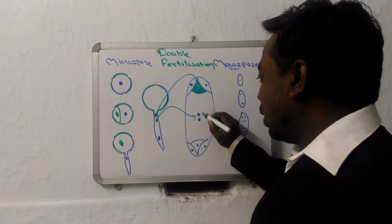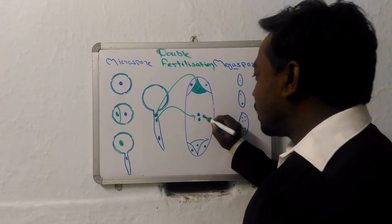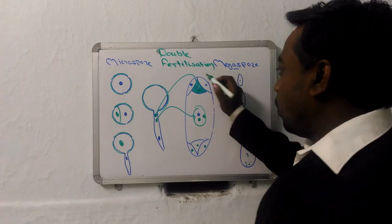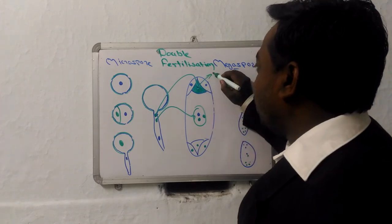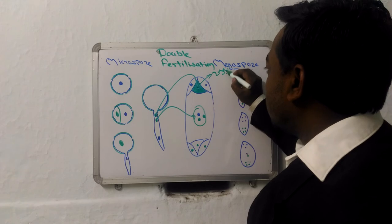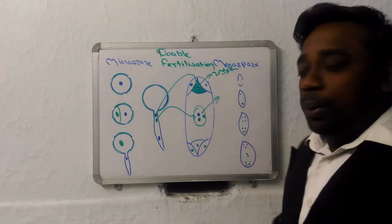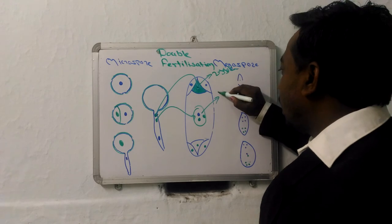So after fertilization, you will get one nucleus here. This cell will be triploid. This cell will be diploid. It is going to form your zygote. And this triploid cell is going to form your endosperm.